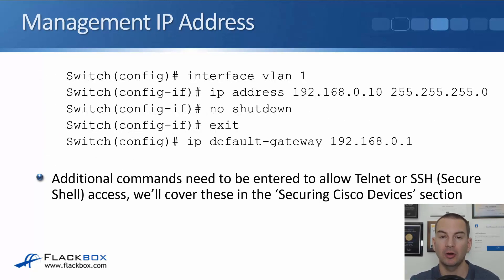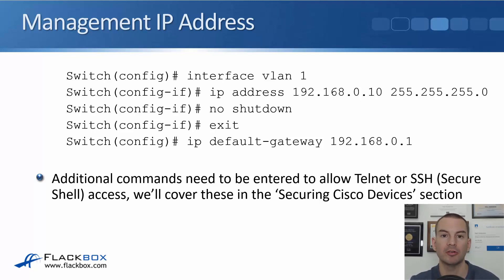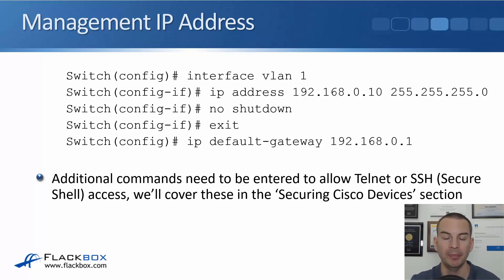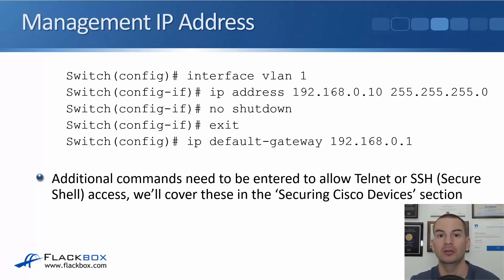Our configuration on the switch for the management IP address: 'interface VLAN 1', then configure the IP address the same way — 'IP address 192.168.0.10 255.255.255.0'. On a router, interfaces are shut down by default, but on a switch, interfaces are enabled by default. So there's no actual need to do a no shutdown here. However, I'm in the practice of always doing a no shutdown whenever I configure an interface.